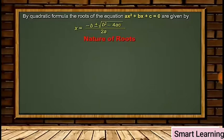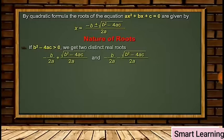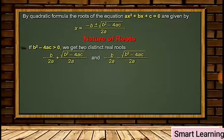Now let us discuss the nature of roots. If b² - 4ac is greater than 0, we get two distinct real roots: (-b/2a) + (√(b² - 4ac)/2a) and (-b/2a) - (√(b² - 4ac)/2a).